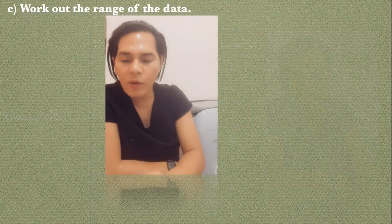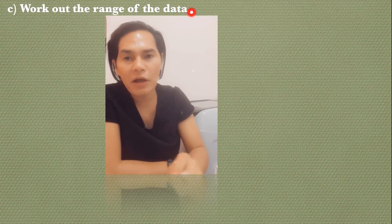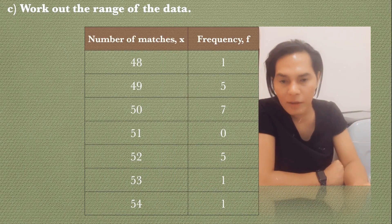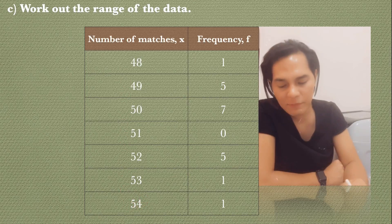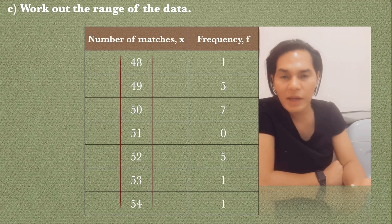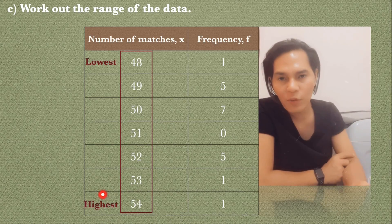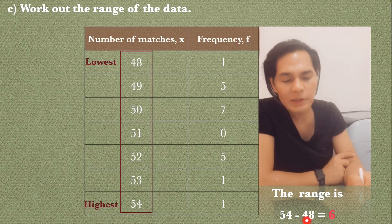Number three is work out the range of the data. Check the number of matches column — the highest score is 54 and the lowest score is 48. Remember, range is the difference of the highest score minus the lowest score. So our range is 54 minus 48, which equals 6.